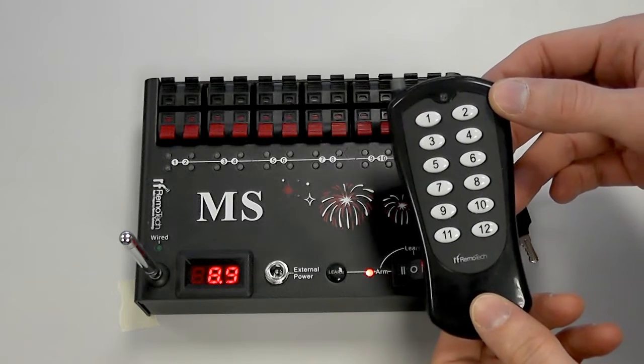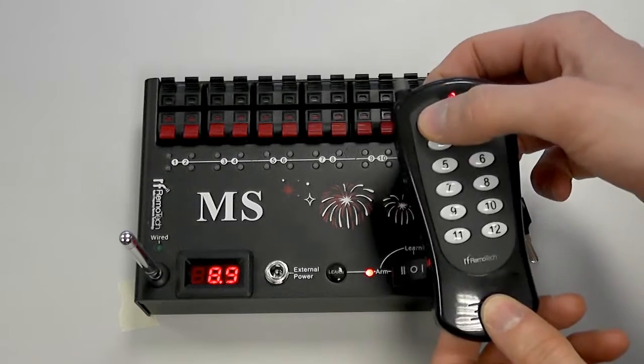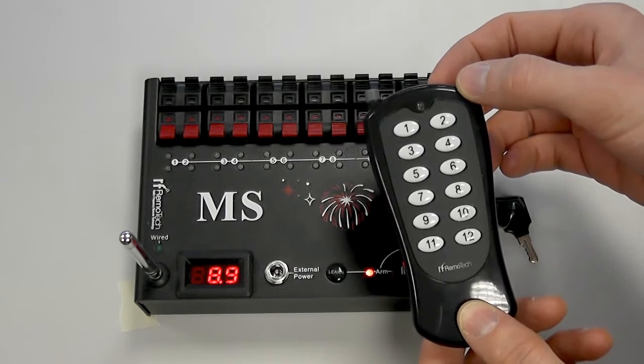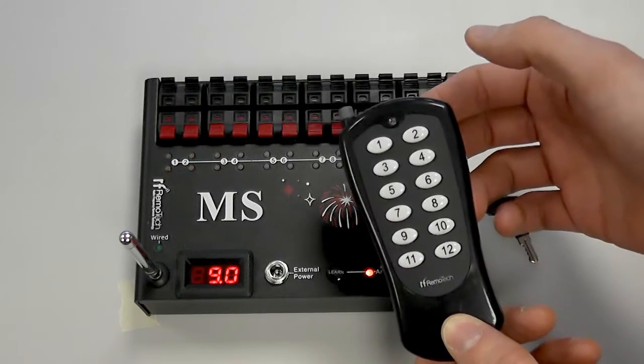So for example if I fire Q1 and then immediately press button 1 again you'll see that Q1 is not firing. You have to wait a few seconds after you've last fired that Q to fire it again. So now if I press it you'll see Q1 fires.